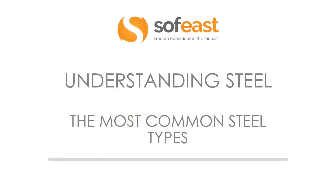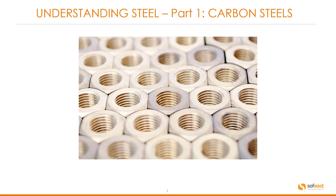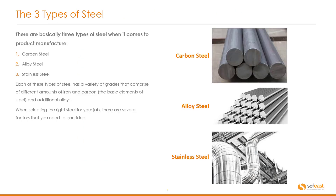Understanding steel: the most common steel types. In this video series we're going to have two parts. The first part we're going to be looking at carbon steels. There are basically three types of steels when it comes to product manufacture: carbon steel, alloy steel, and stainless steel. In this first part we're going to be concentrating on carbon steel and alloy steel, and we're going to be covering stainless steel in part two of this series.